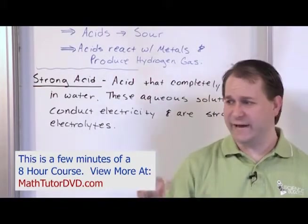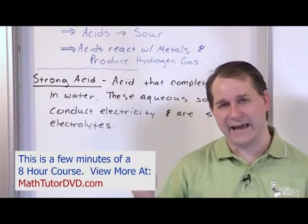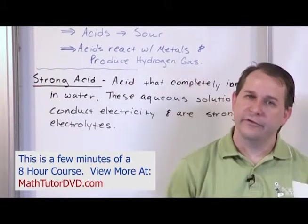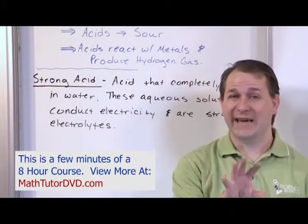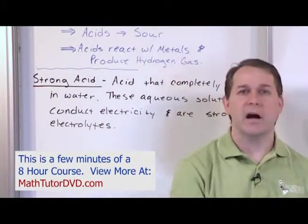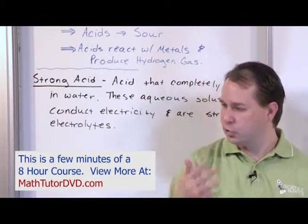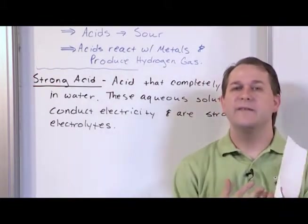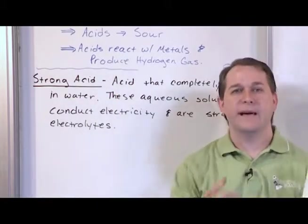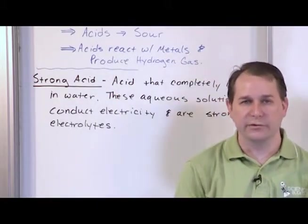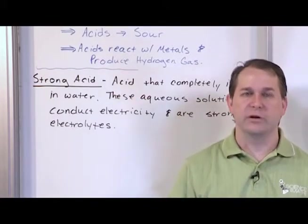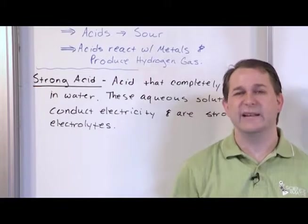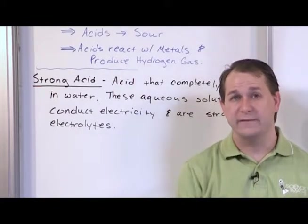You take hydrogen chloride gas, HCl gas, put it in water, and it immediately starts to dissociate and break down. The hydrogen ions are floating around in the water, the chlorine ions are floating around in the water, and it breaks down completely. Since it's fully dissociated, we call it a strong acid. With all these ions in solution, the solution is able to conduct electricity.